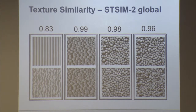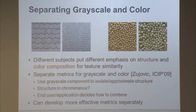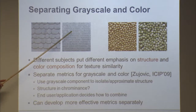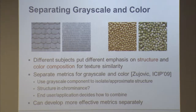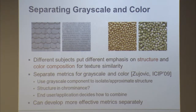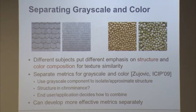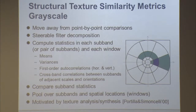One more comment about texture similarity: some people consider textures similar because of similar colors, others because of similar structure — this is subjective and may depend on the application. Our approach has been to consider the two problems separately. Ignoring color is easy — just take the grayscale component. Isolating color is more difficult; we've done it in some ways, but it's not trivial.